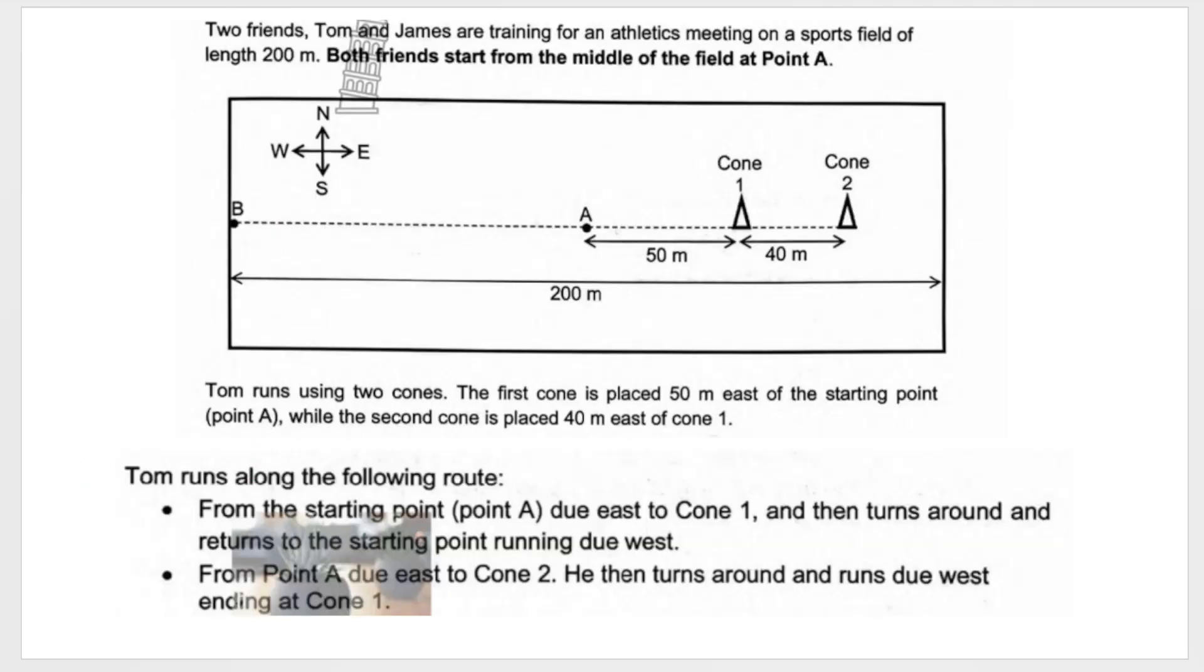It says here, Tom runs along the following route. So let us map Tom's route. What Tom does is he starts at A and then he runs due east to cone one. Then he turns around and returns to the starting point due west. So he goes west, ends back at point A. Then from A again, he runs to the east to cone two. And then he turns around, runs west and stops at cone one. So he started here and ended here at cone one.